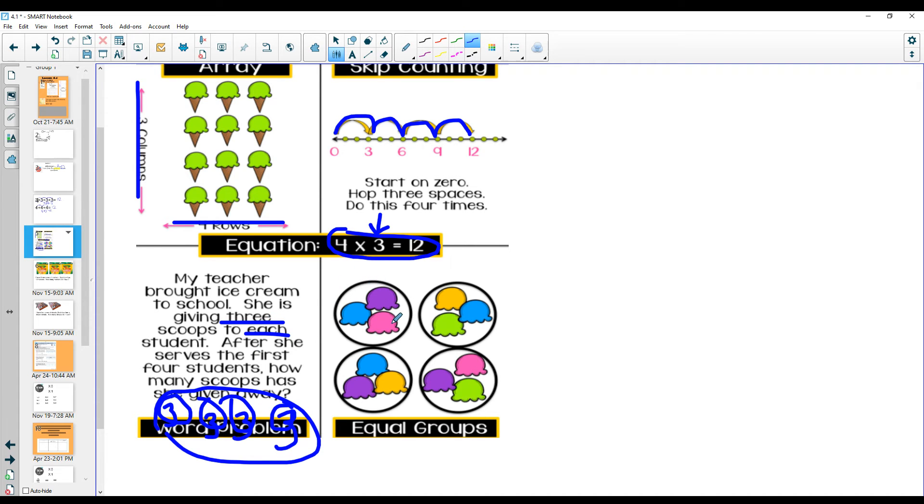We can also make groups. We can say this is four groups of three. So drawing pictures can help us with multiplying.